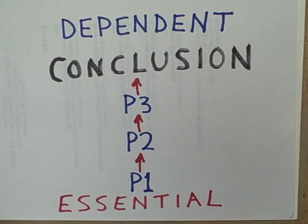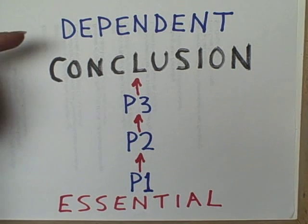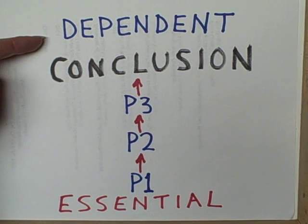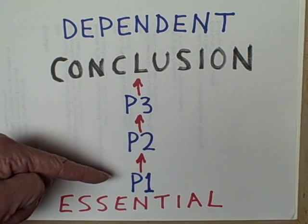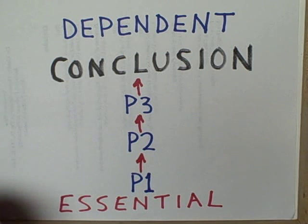Another structure of multiple premises is known as a dependent array. Here we have several different premises, but each one is linked to the other. Each one is essential to support the conclusion.